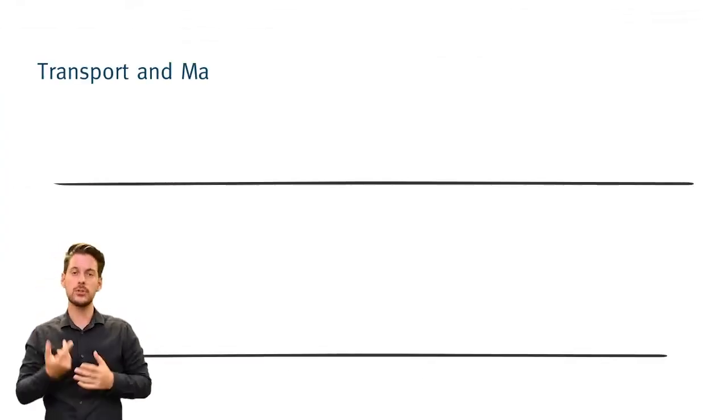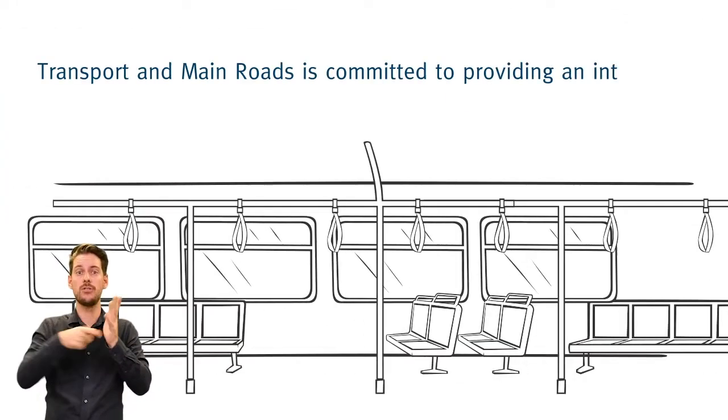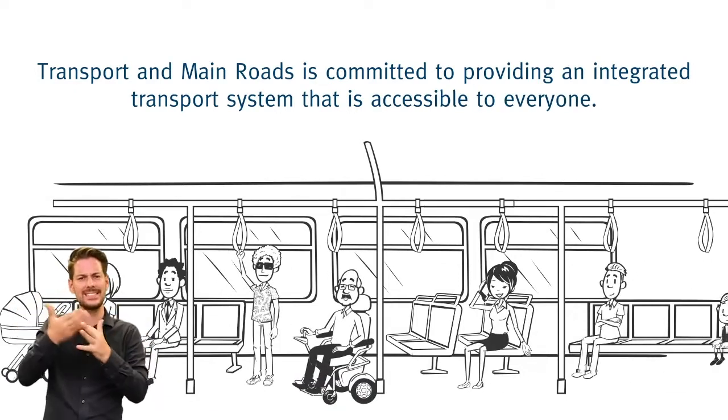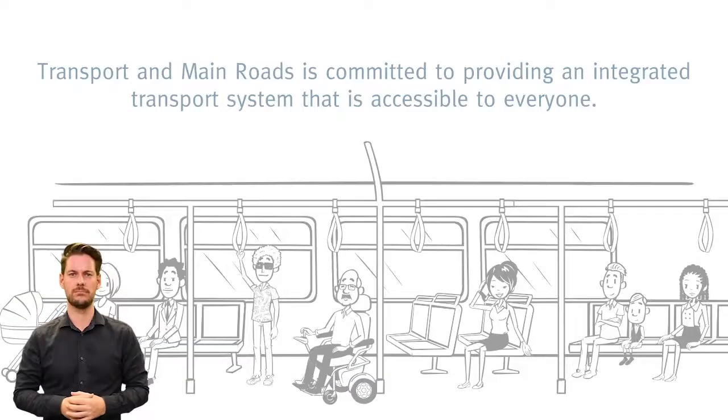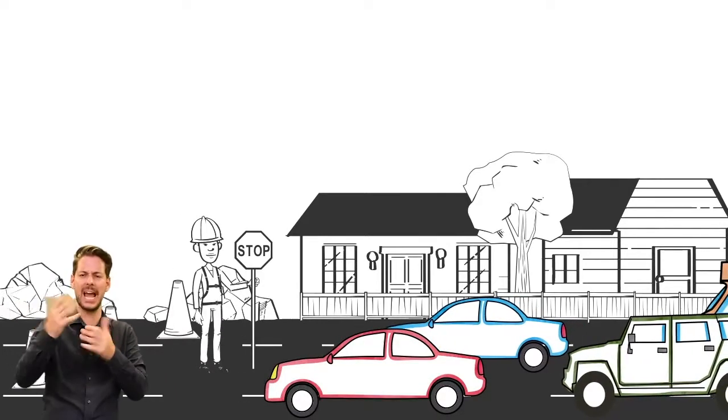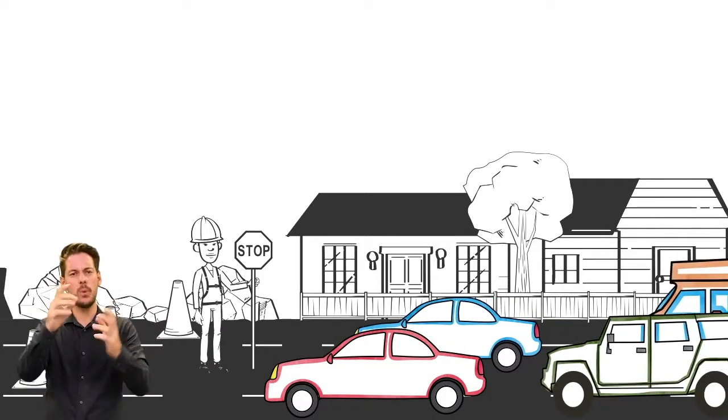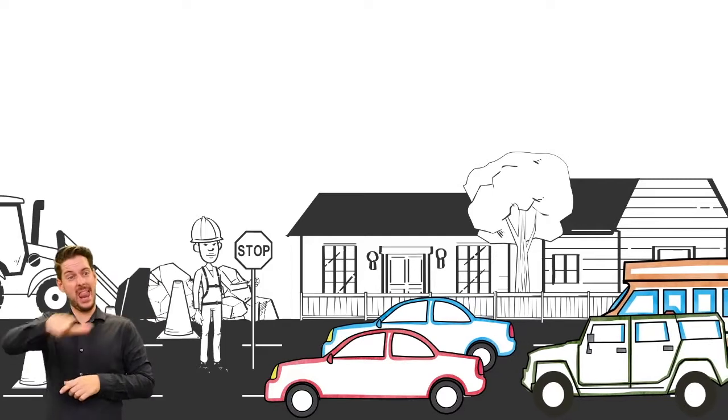Transport and Main Roads is committed to providing an integrated transport system that is accessible to everyone. To do this and ensure we have a better and safer transport network, sometimes privately owned land needs to be acquired.